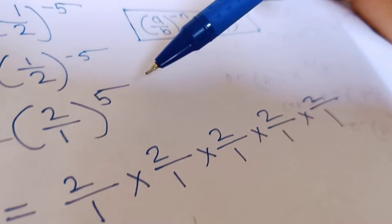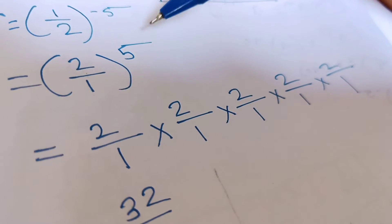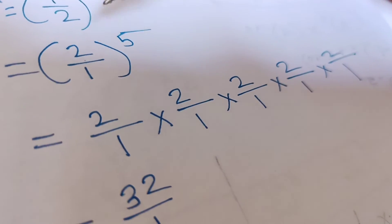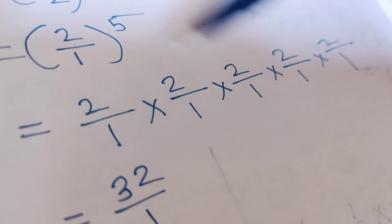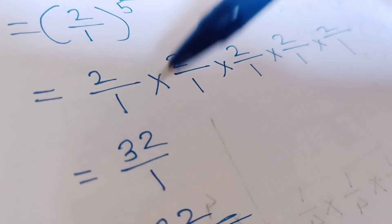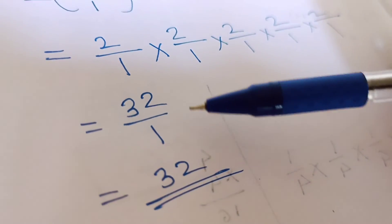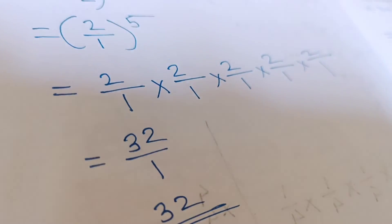So now we have to multiply 2 five times with this same only. So by multiplying this 5 we have get the value of 32 upon 1. So 32 is the answer of this question.